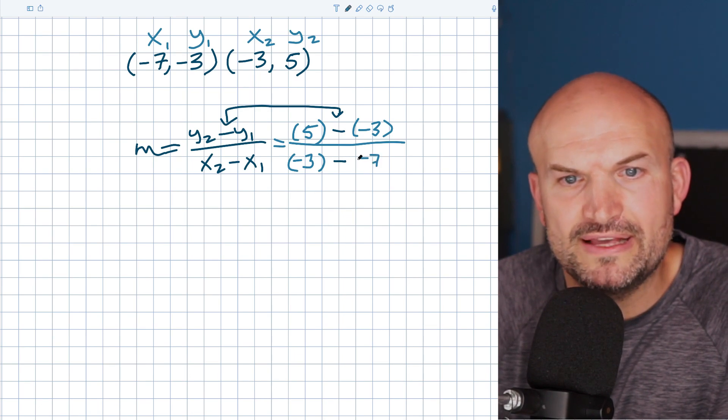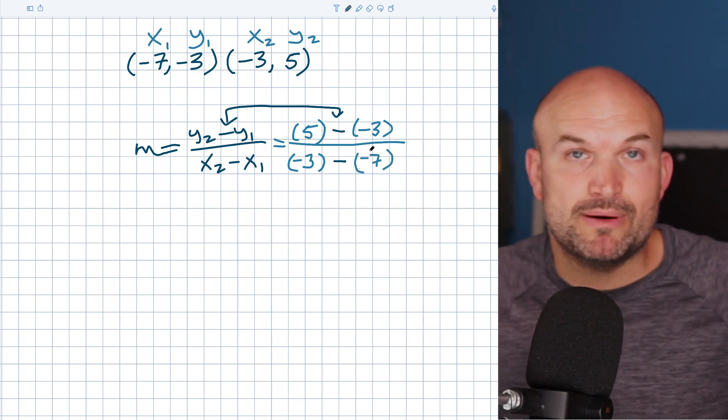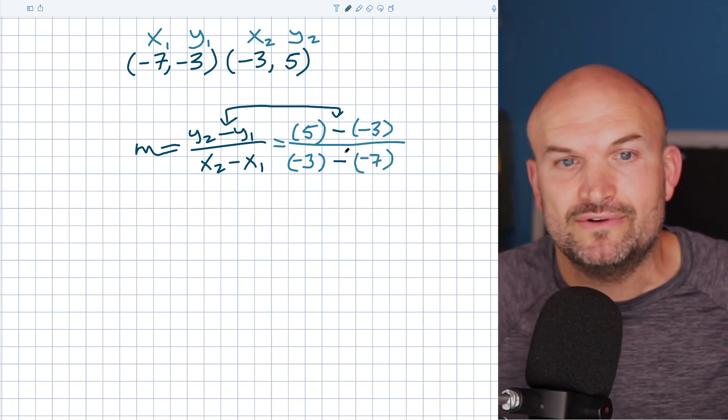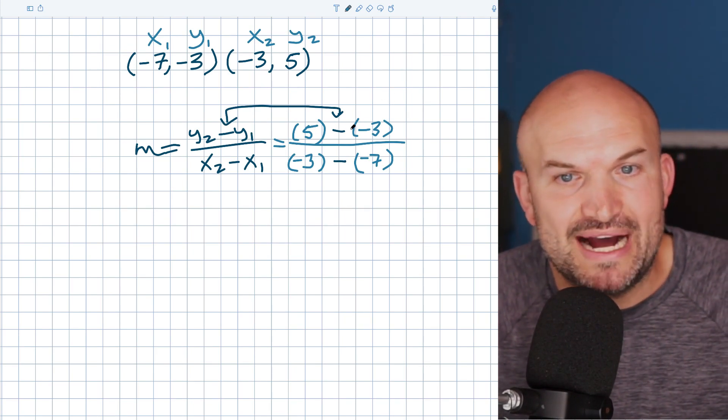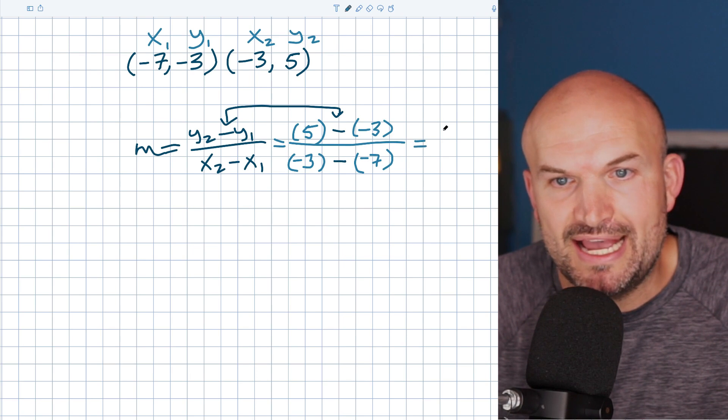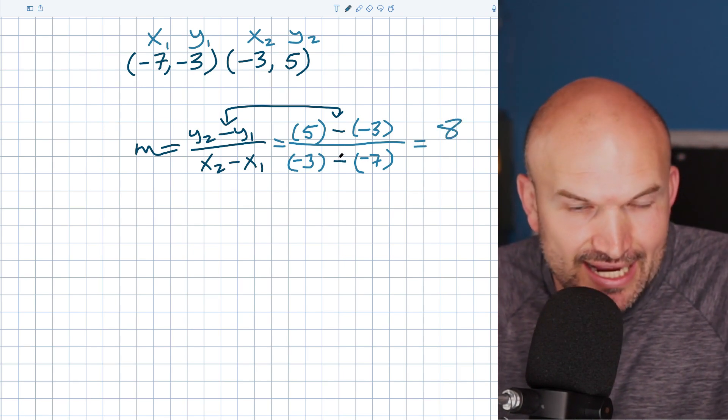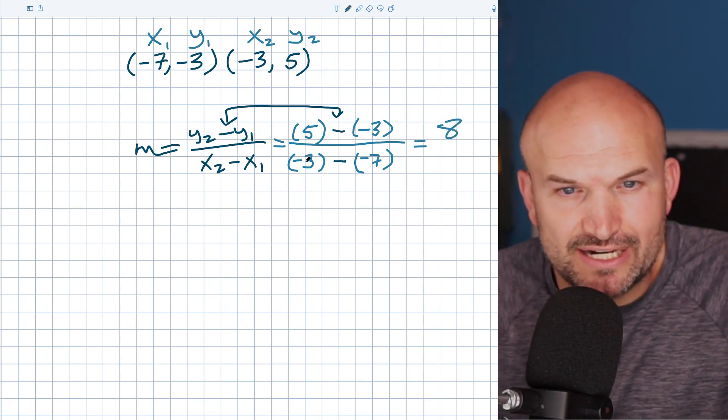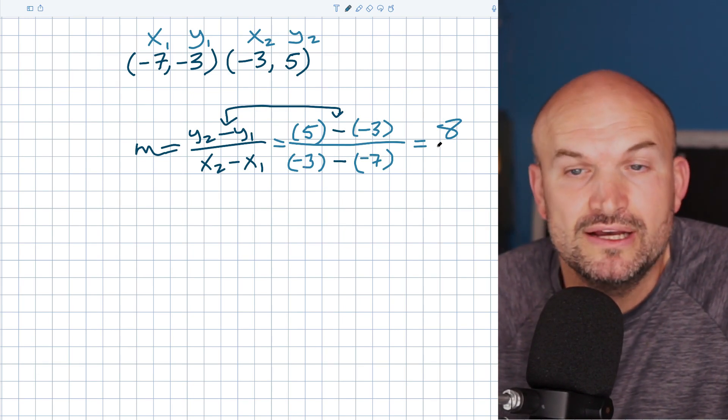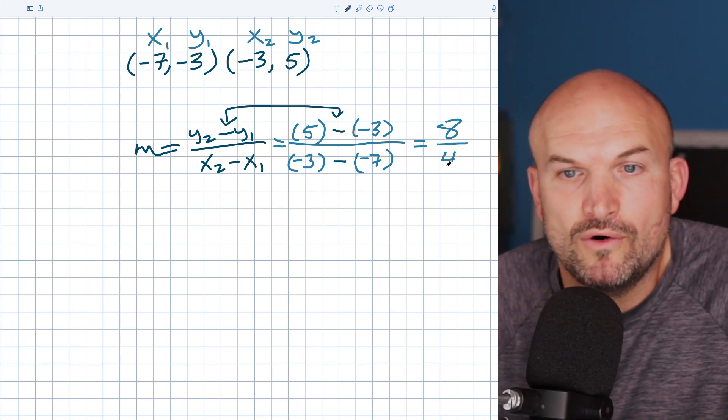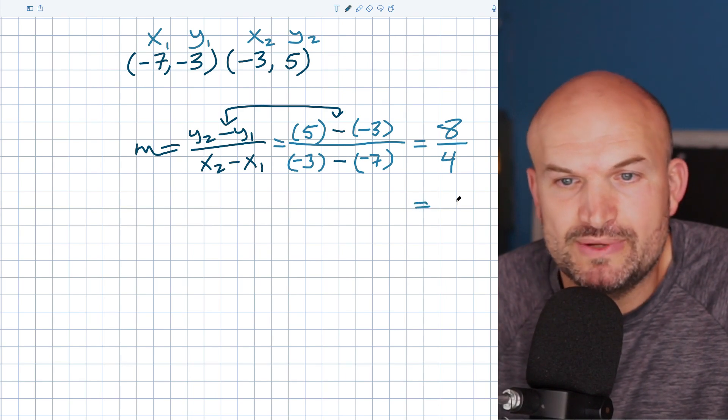Now the thing that I want you to remember is subtracting a negative is like adding, right? It's like a double negative. So you're really actually adding in this case. So this is five minus negative three, which is just going to be eight. And this is negative three minus negative seven. So that's adding. So it's like negative three plus seven, which is really just going to be four.